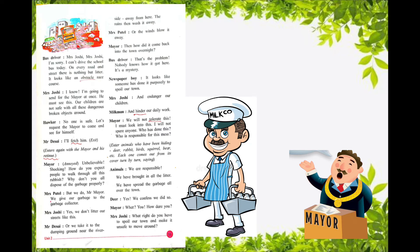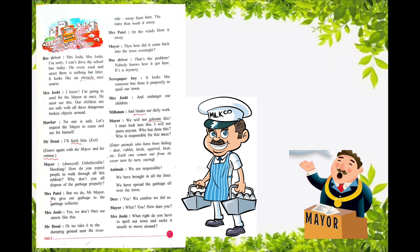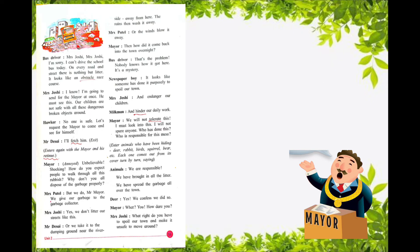The milkman said, 'And to hinder our daily work.' Underline 'hinder' — meaning to limit the ability of someone to do something. The mayor said, 'We will not tolerate this. I must look into this. I will not spare anyone who has done this — who is responsible for this mess.' The mayor said he would give punishment to whoever did all this.